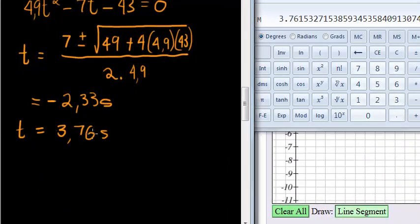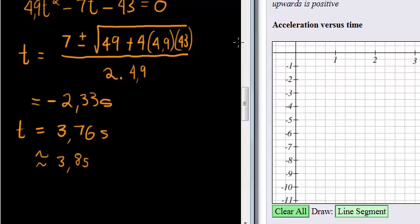After 3.76 seconds, since we're working on a graph, rounding to two decimal places should be fine. So let's round it a little bit more, 3.8 seconds. That's how long this whole journey will last. So let's go draw our graph.